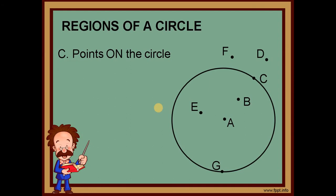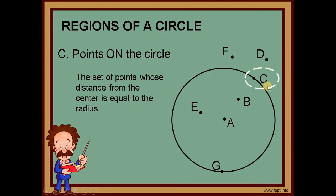Points on the circle — ito yung mga points na nasa circle mismo. In our example, those are point C and point G. The definition: these are the points whose distance from the center is equal to the radius. Please take note of the definitions we mentioned because we will use them in our next topics about circles.